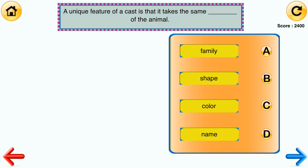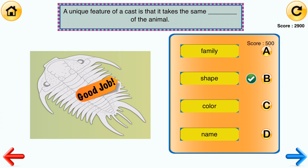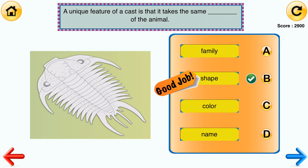A unique feature of a cast is that it takes the same blank of the animal. Answer choices: family, shape, name. Correct answer: shape.